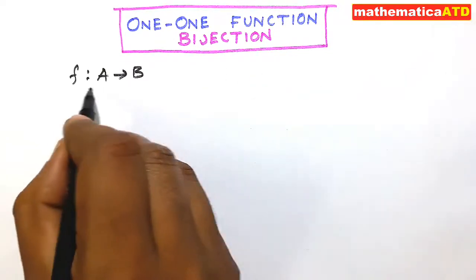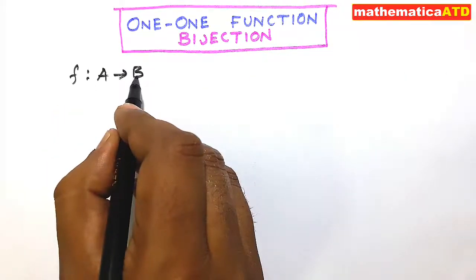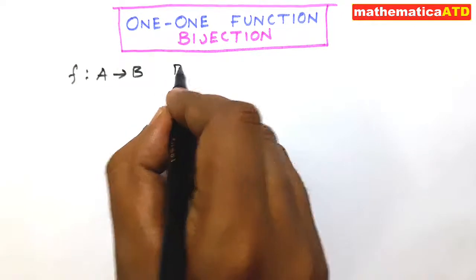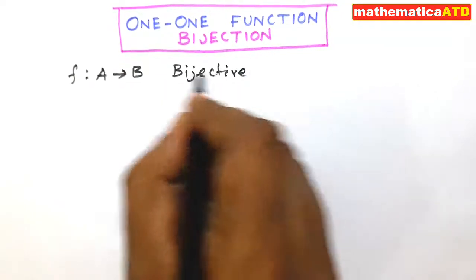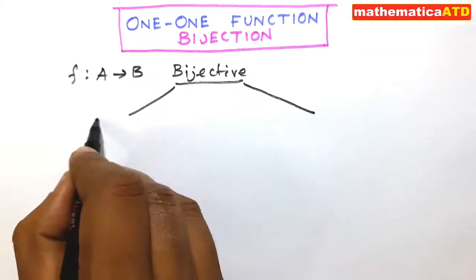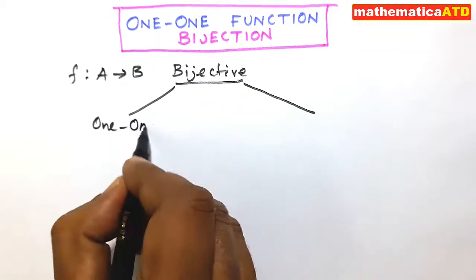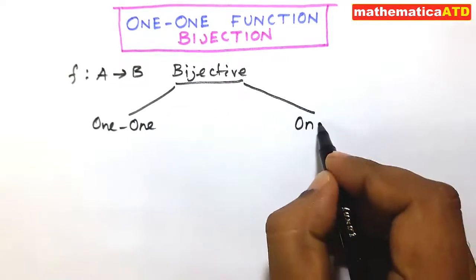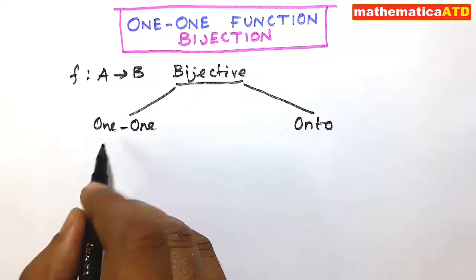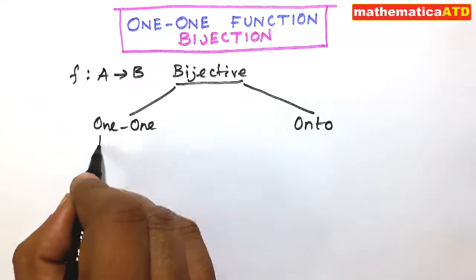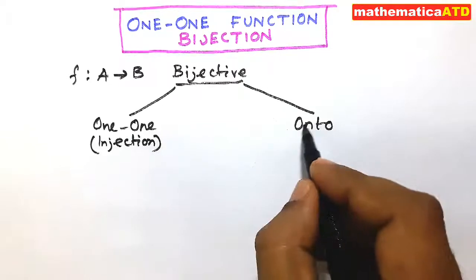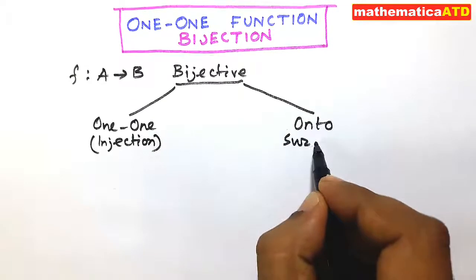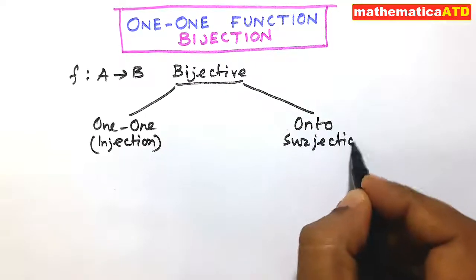A function f from A to B is a bijective function if it is simultaneously one-one and onto. One-one means injective — this is called injection — and onto means surjective — this is called surjection.